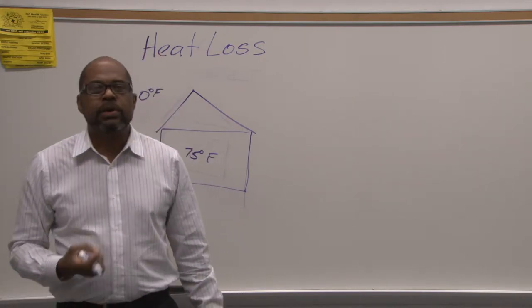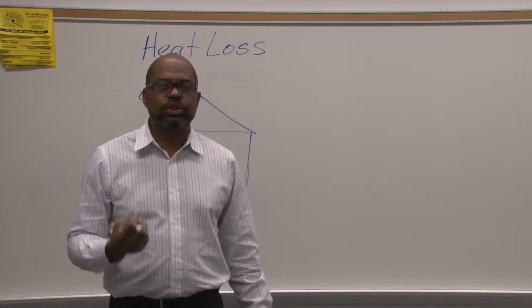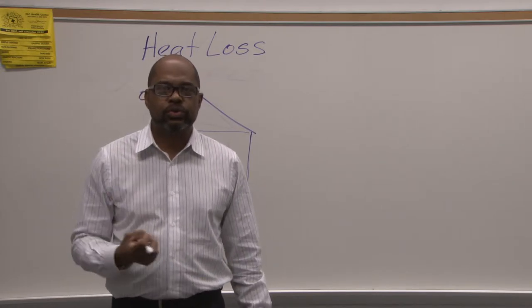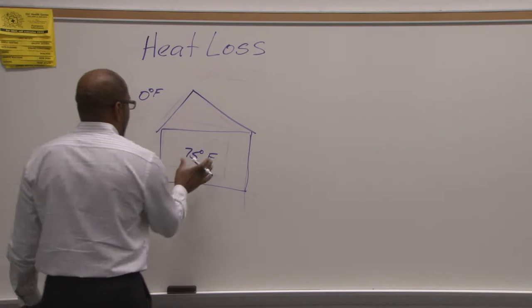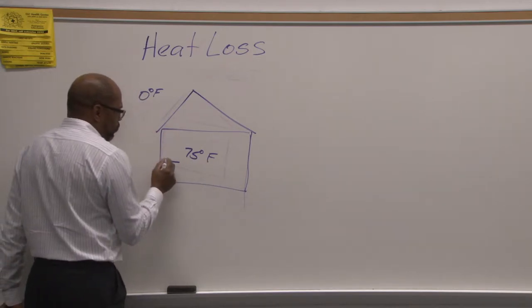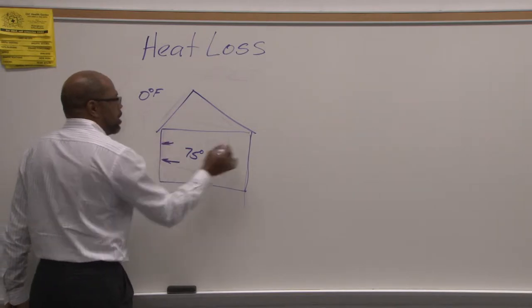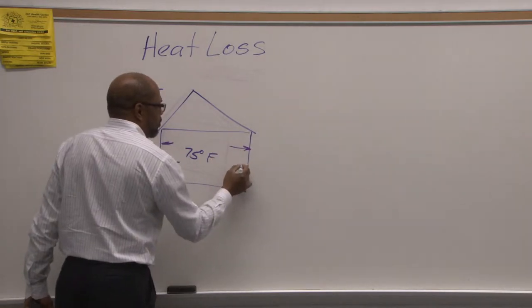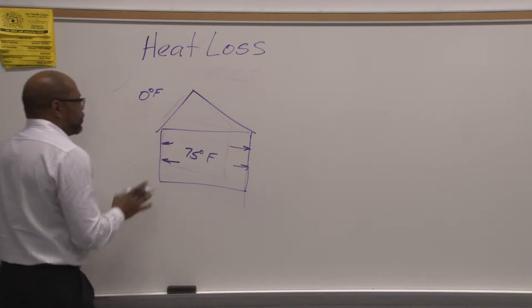Thermodynamics says that heat will always travel from a warm source to a cooler source. So in other words, the house inside is warm, outside is cold, so the heat will travel to the perimeter of the house from the inside and out. So we will lose heat.